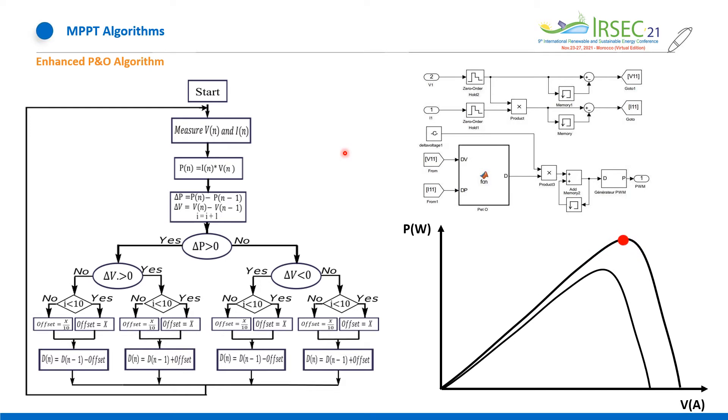Its principle consists of perturbing duty cycle in a certain direction by analyzing power and voltage. In this study, we used the large duty cycle in order to achieve quickly the MPP. Then, it comes the role of small duty cycle in order to reduce the oscillation around the MPP.